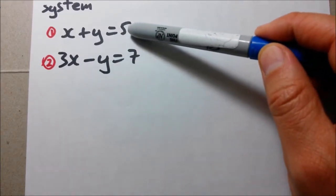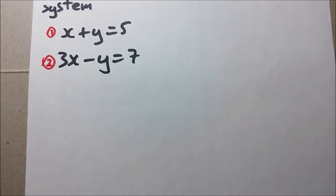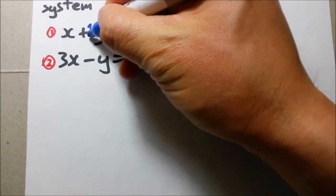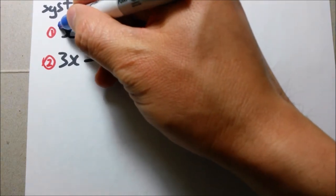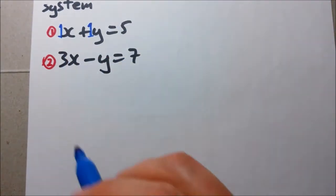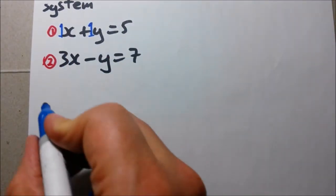In this case, I'm going to choose equation 1 again, simply because it has smaller numbers. I can see here there's like a 1y, 1x, right? So these are smaller numbers. So choose whatever is easier for you. So let's do our first step.